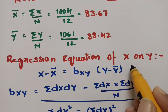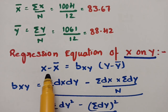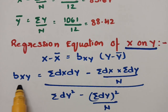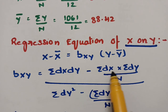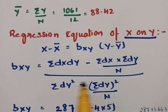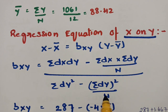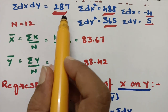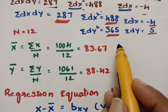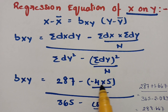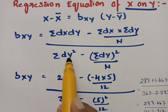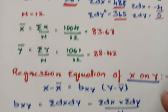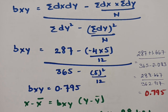Now we calculate the regression equation of x on y. Since the mean is a fraction we use: bxy = [Σ(dx·dy) − (Σdx · Σdy)/n] / [Σdy² − (Σdy)²/n]. Substituting: numerator = 287 − [(−4)(5)/12] = 287 − (−20/12) = 287 + 1.667. Denominator = 365 − (5²/12) = 365 − 25/12 = 365 − 2.083.